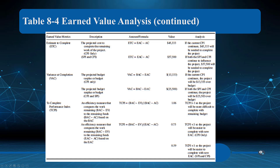Estimate to complete (ETC) is the projected cost to complete the remaining work, calculated as EAC minus AC. Using our numbers, that's forty-five thousand three hundred thirty-three for the typical scenario and fifty-seven thousand five hundred for the atypical scenario. This represents the difference — essentially what we still need to spend beyond what's already been paid.